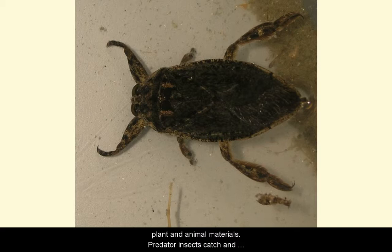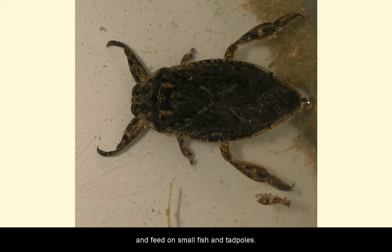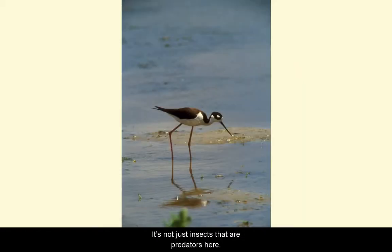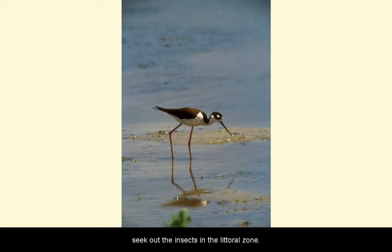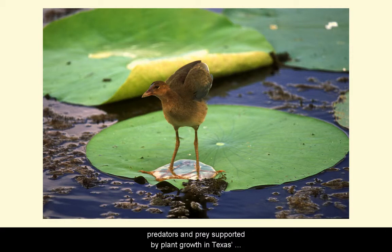Omnivorous insects eat both plant and animal materials. Predator insects catch and feed on live animals such as other invertebrates. In fact, some aquatic insects are fast enough and large enough to catch and feed on small fish and tadpoles. It's not just the insects that are the predators here — fish and insect-eating land animals, and in particular birds, seek out the insects in the littoral zone. They help complete the complex food web of predators and prey supported by aquatic plant growth in Texas lakes and ponds.